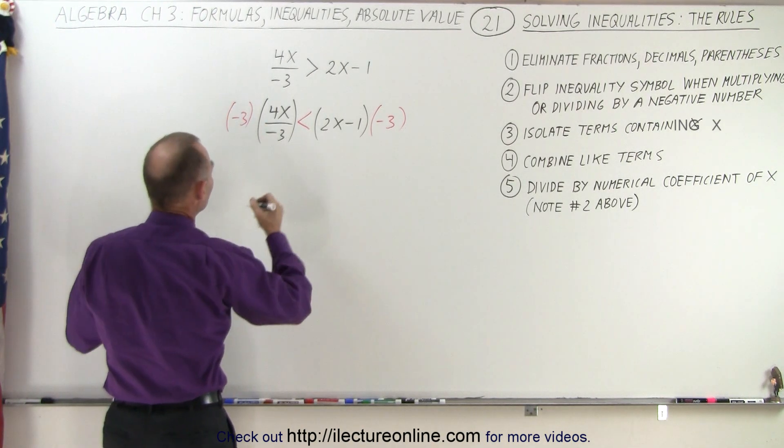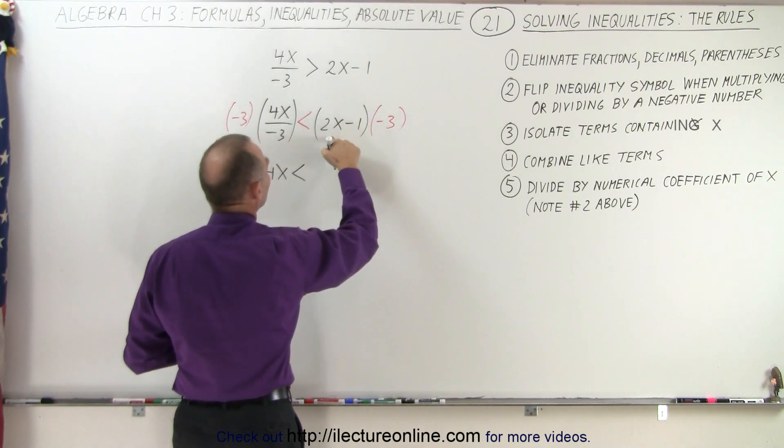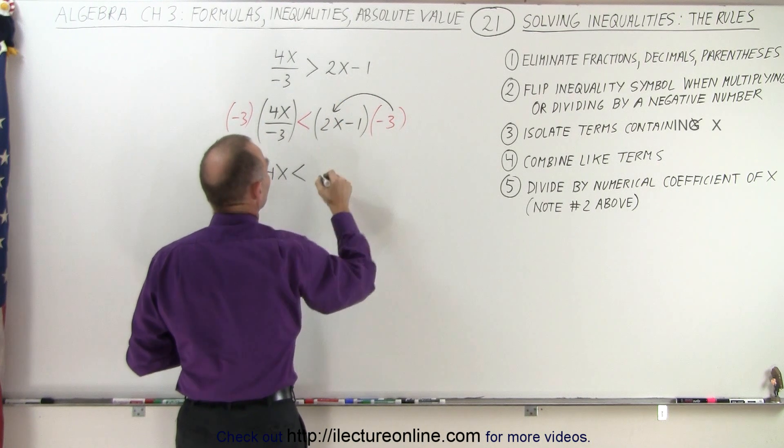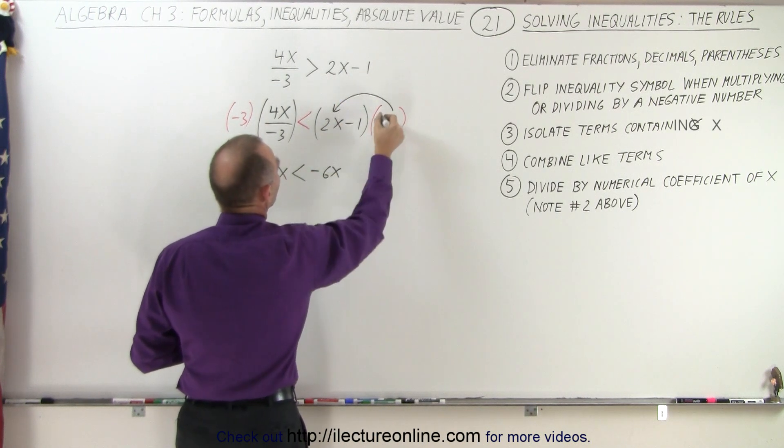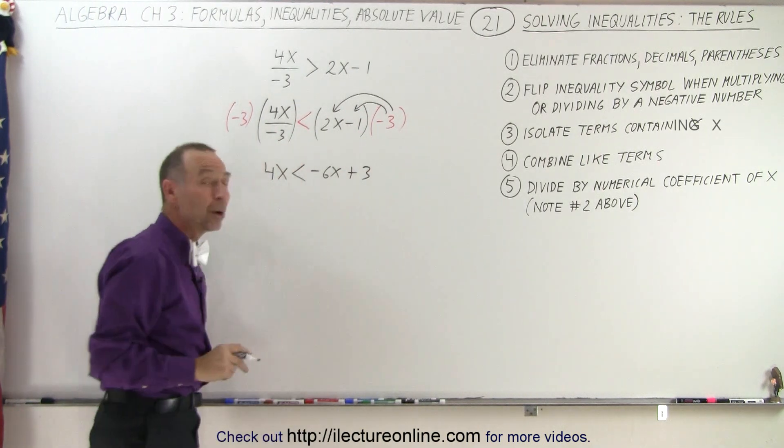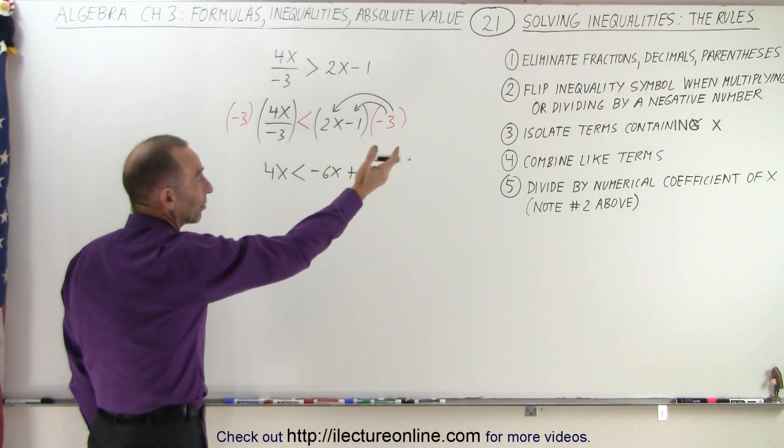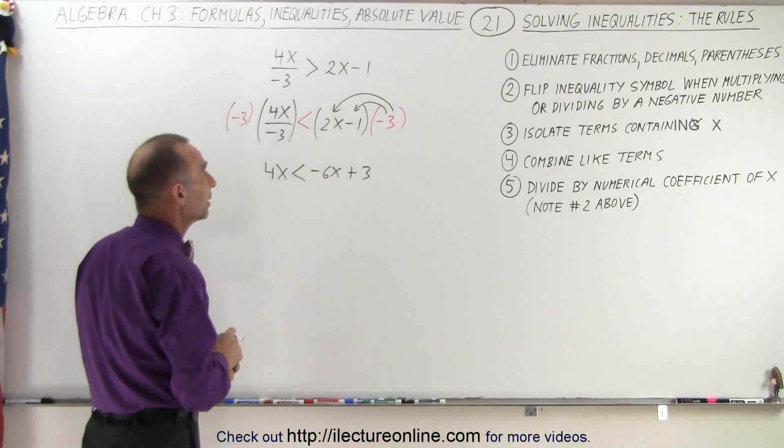The negative three cancels out, so I end up with 4x. It's less than, when I multiply negative three times the 2x, I get negative 6x. And then negative three times the negative one gives me plus three. Now I need to move all the terms with x to one side. In this case, step number three, isolate terms containing the x.